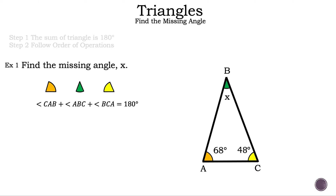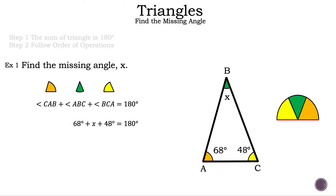Another reason why this is the case is if we put all the angles together, they form a half circle, which is also 180 degrees. Let's go ahead and substitute what we know — 68 degrees and 48 degrees — now we have 68 degrees plus X plus 48 degrees is equal to 180 degrees. Let's simplify the left-hand side by adding 68 degrees and 48 degrees, and the result of that is 116 degrees.